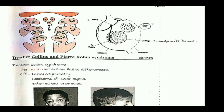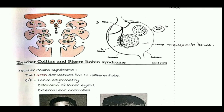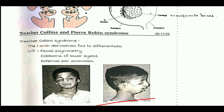In the diagram we can see the first, second, third, fourth, and sixth pharyngeal arches. Each pharyngeal arch has a cartilage component that transforms to bone, a muscle component attaching to the bone, a nerve supplying the muscle, and an aortic arch artery component — four components in total.